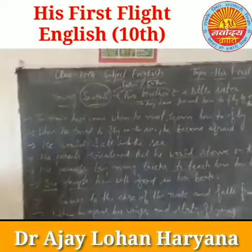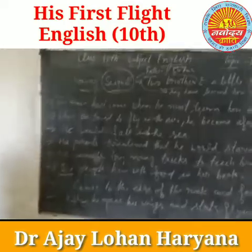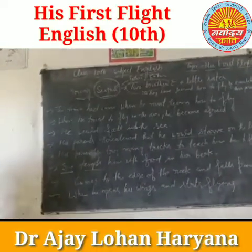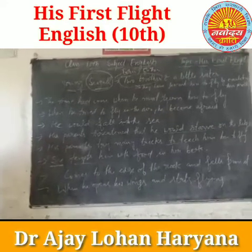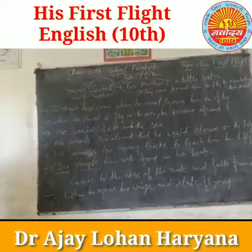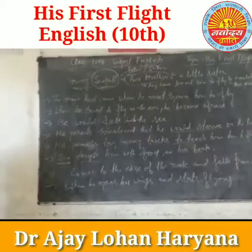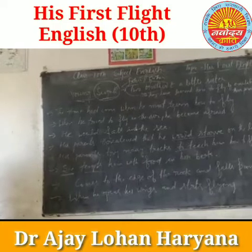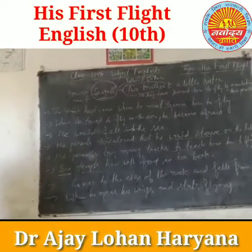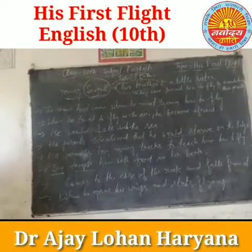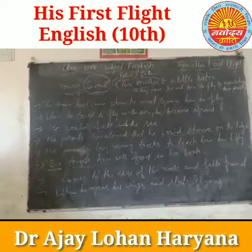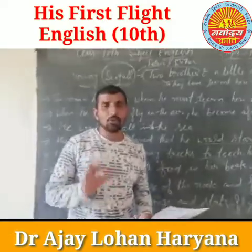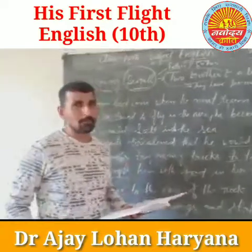But when the time came for him to fly, he felt afraid. His parents tried many tricks to teach him to fly, but he was so afraid that he refused to fly. At last his mother hit upon a plan — she tempted him with food in her beak but only flew near his ledge and did not land. In order to get food, the hungry seagull came to the edge of the ledge and fell from it. At first he was terrified, but then he opened his wings and started flying. He was happy to know that he did not fall in the sea — in this way, the young seagull learned how to fly.